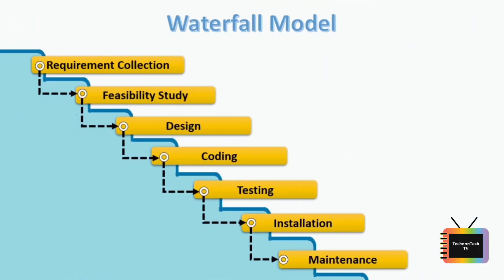Without completing the first stage you cannot move to the second stage. This is the basic concept of the waterfall model. If you are using the waterfall model for your project, these seven stages may have stages added or removed according to your project. These are the basic stages as per books, but if we are developing software in the real world, different stages will be added according to the project requirement.